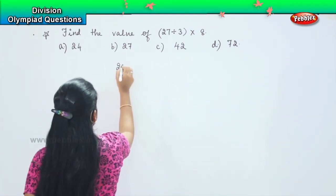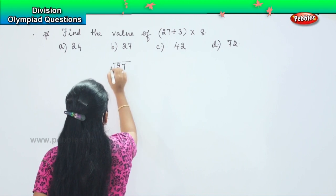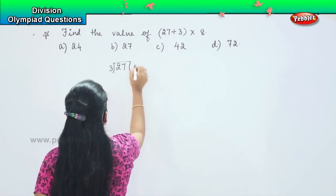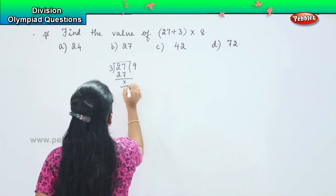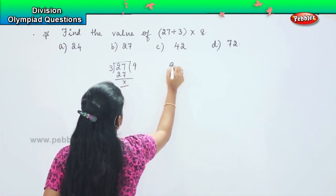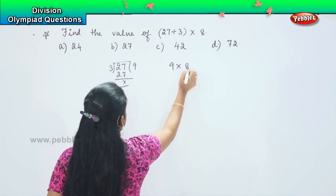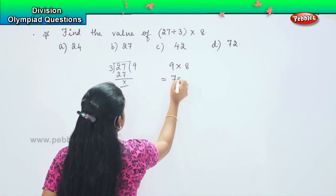So first one we will do the division. So 27 divided by 3. So 3 into 9 is 27. So which means that now 9 into 8. So 9 8's are 72.